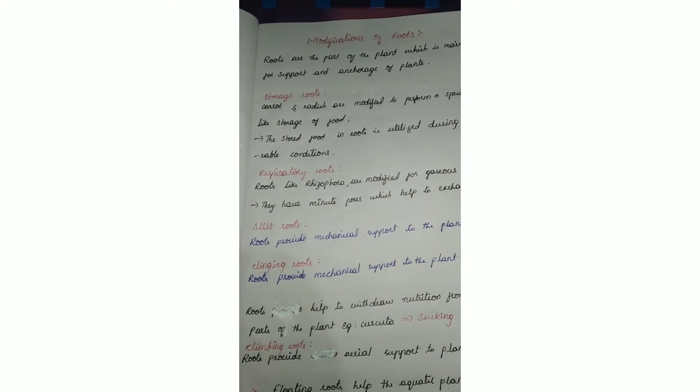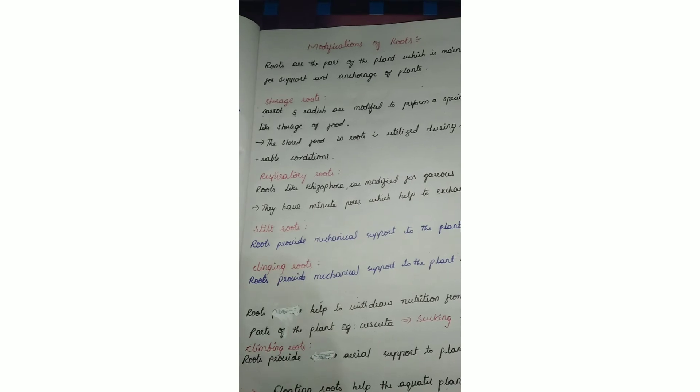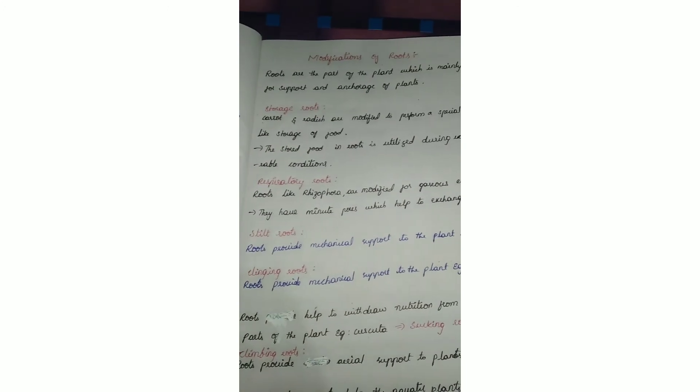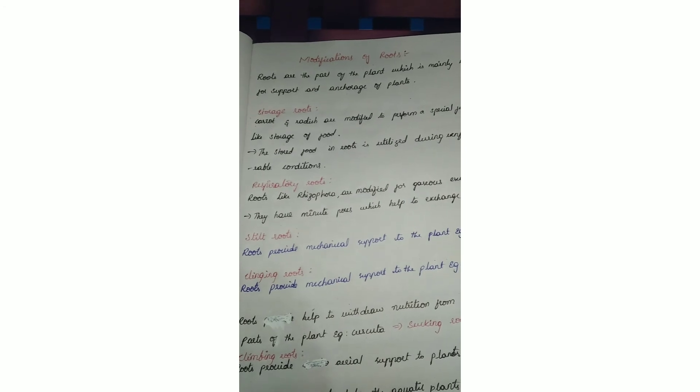Next is stilt roots. Roots provide mechanical strength, support the plant, and provide mechanical strength. Example is sugarcane. Clinging roots also provide mechanical strength and support to the plant. Example is orchids, which are ornamental flowering plants.